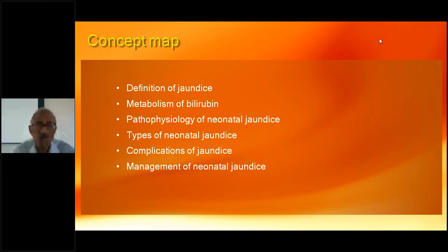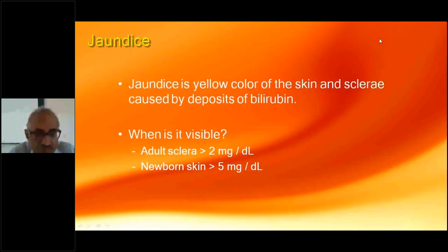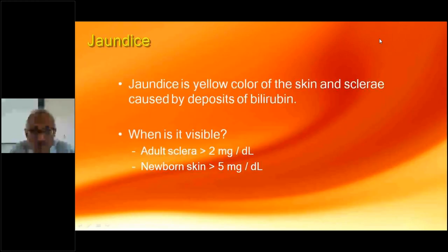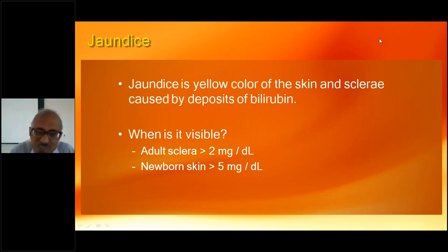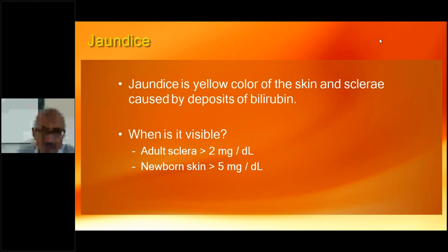Jaundice is the discoloration of the skin and sclera due to deposition of bilirubin. To make it visible in an adult sclera, the bilirubin concentration has to be at least 2 mg/dL. To make it visible in a newborn's skin, it must be at least 5 mg/dL before we can visualize and notice it.